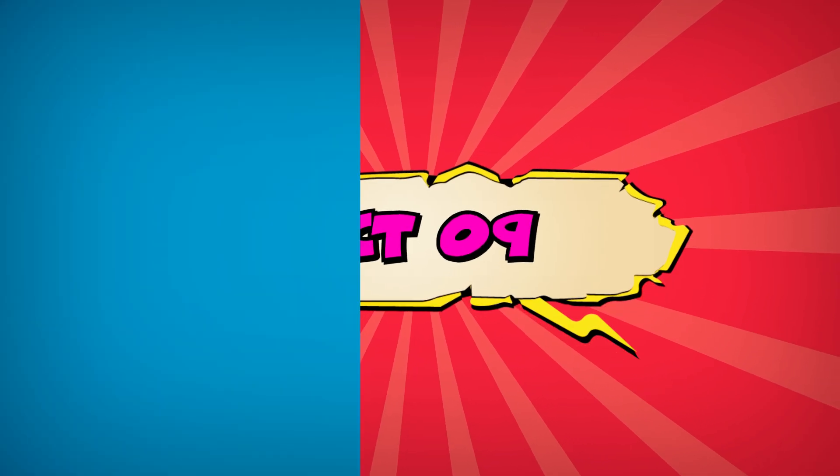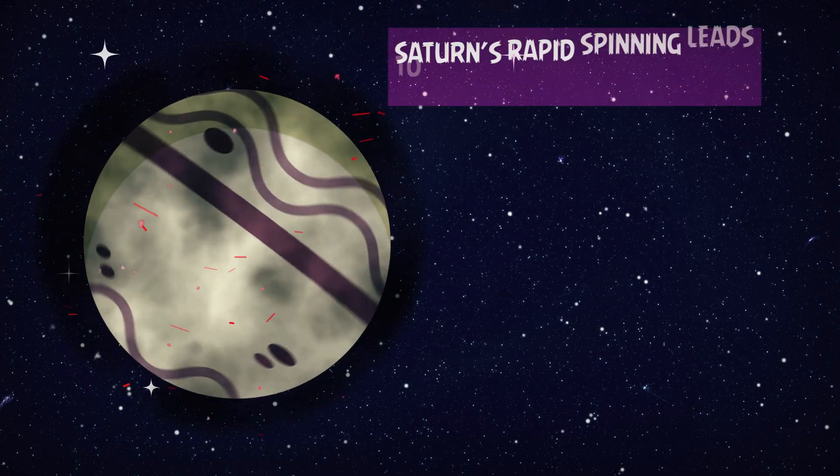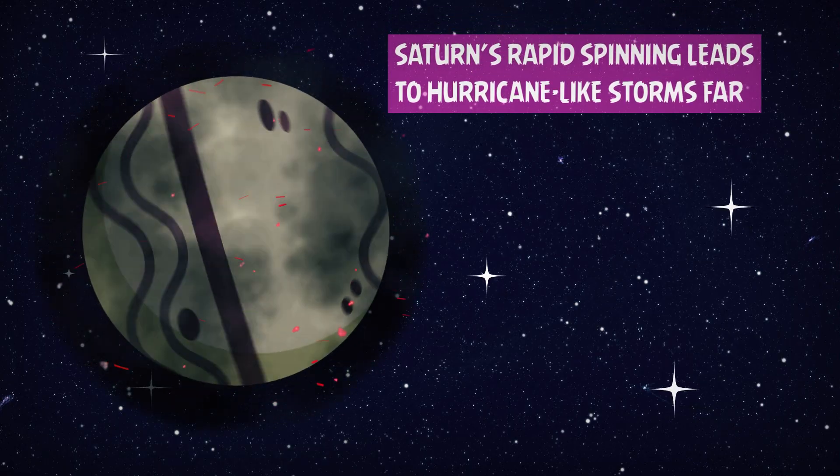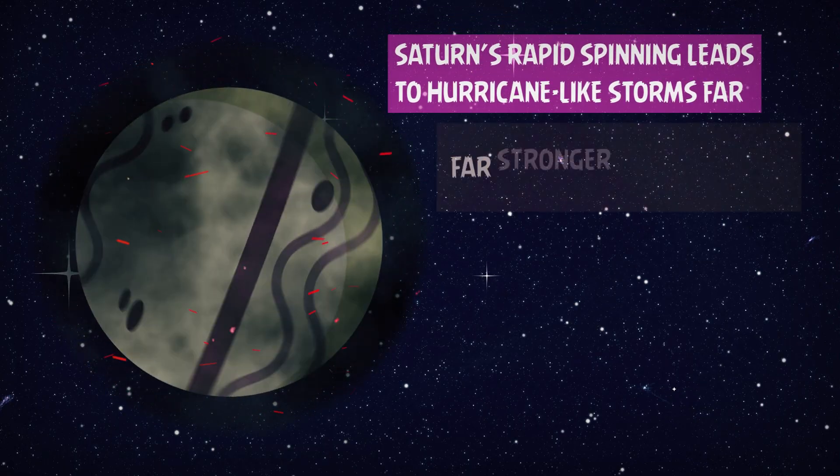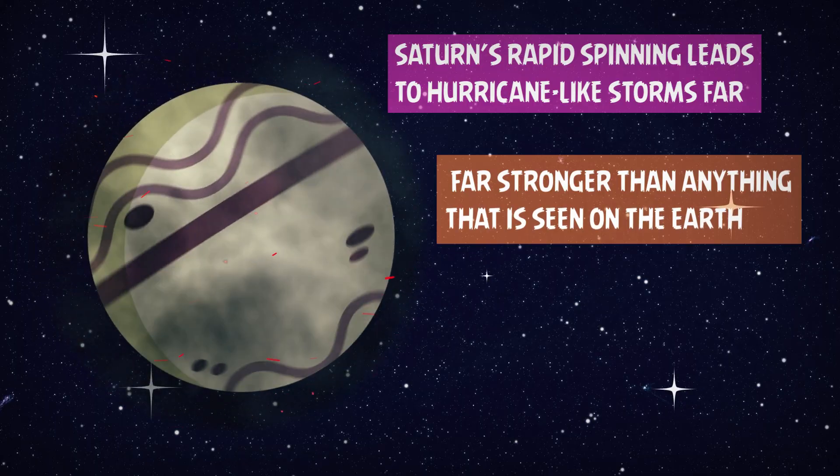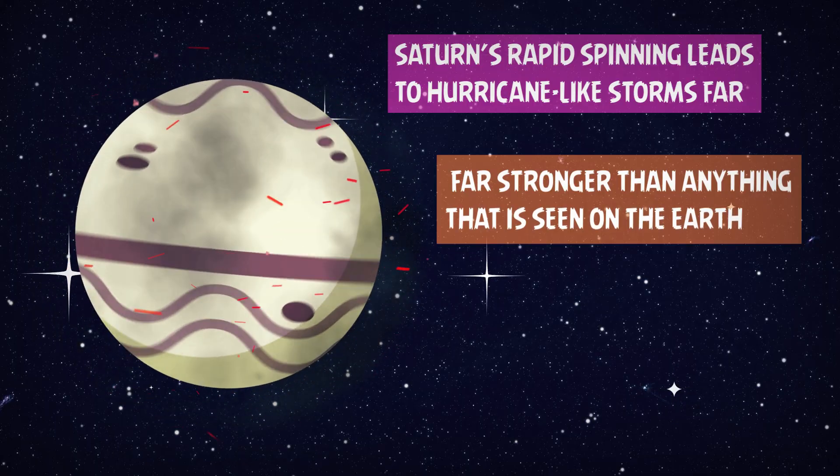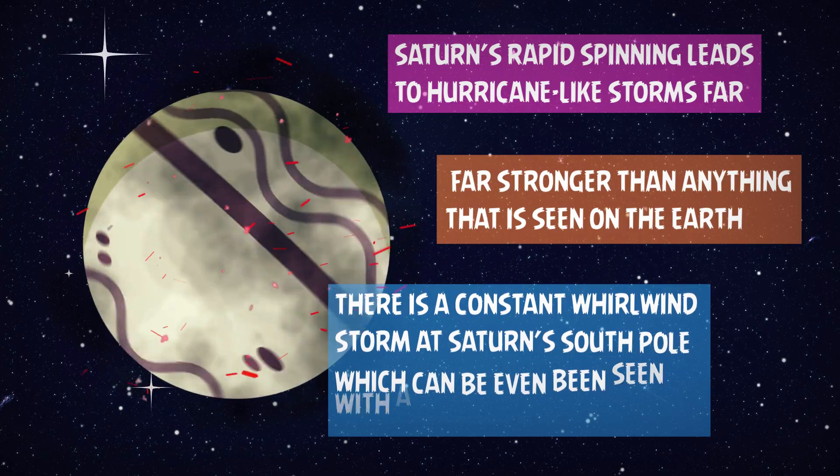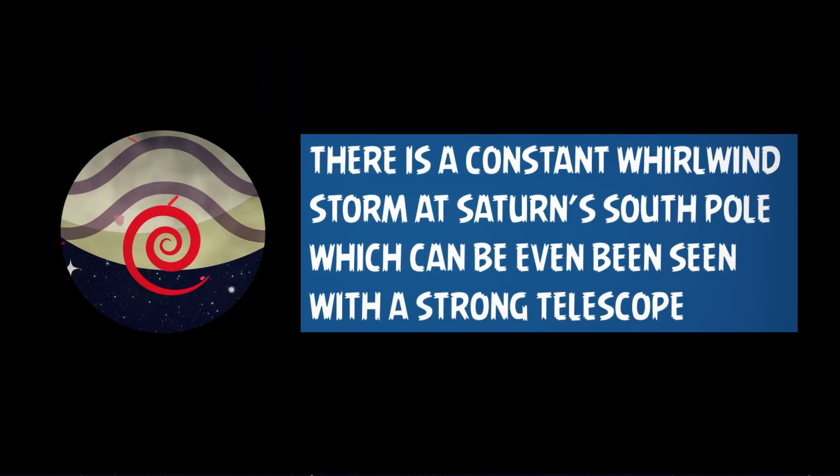Number 9. Aaron, did you know that this rapid spinning leads to hurricane-like storms, far stronger than anything we've seen on Earth? There is a constant whirlwind storm at Saturn's south pole, which can be even seen with a strong telescope.